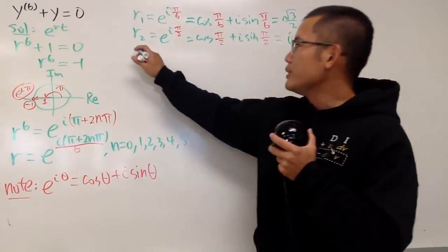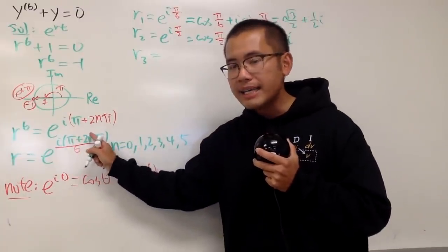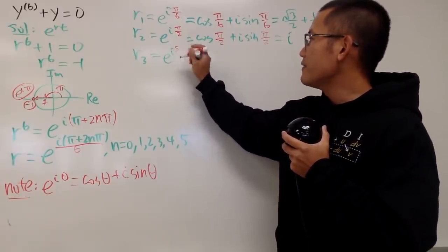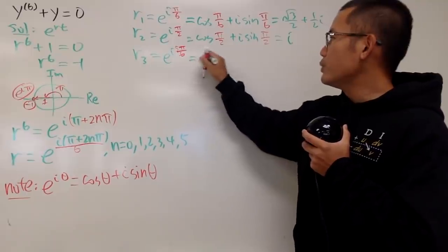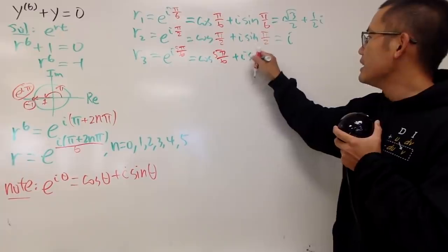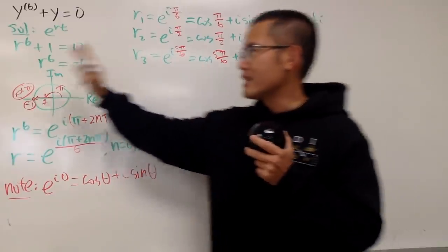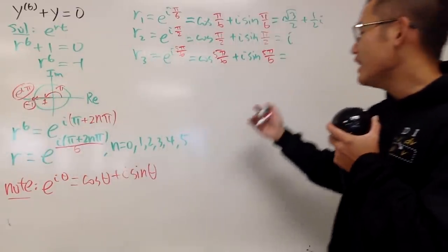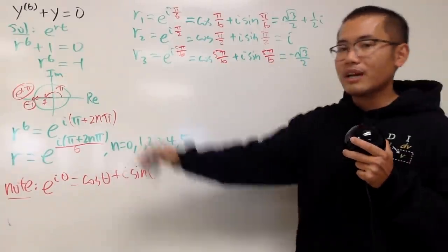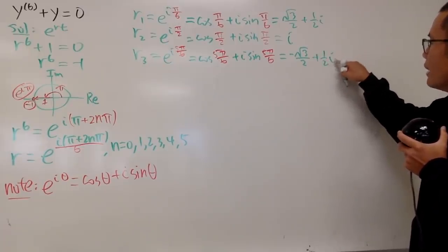e to the i pi over 2 equals cosine of pi over 2 plus i sine of pi over 2. And this is actually really nice, because cosine of pi/2 is 0, and sine of pi/2 is 1, so we have just i right here. That's very nice. Then r3: putting n = 2 in here, that will give us 5 pi over 6, so we have e to the i 5 pi over 6. Then cosine of 5 pi over 6 plus i sine of 5 pi over 6. This right here is going to be in the second quadrant, so you have negative √3/2, and this right here will be still positive 1 half — so we have negative √3/2 + (1/2)i.